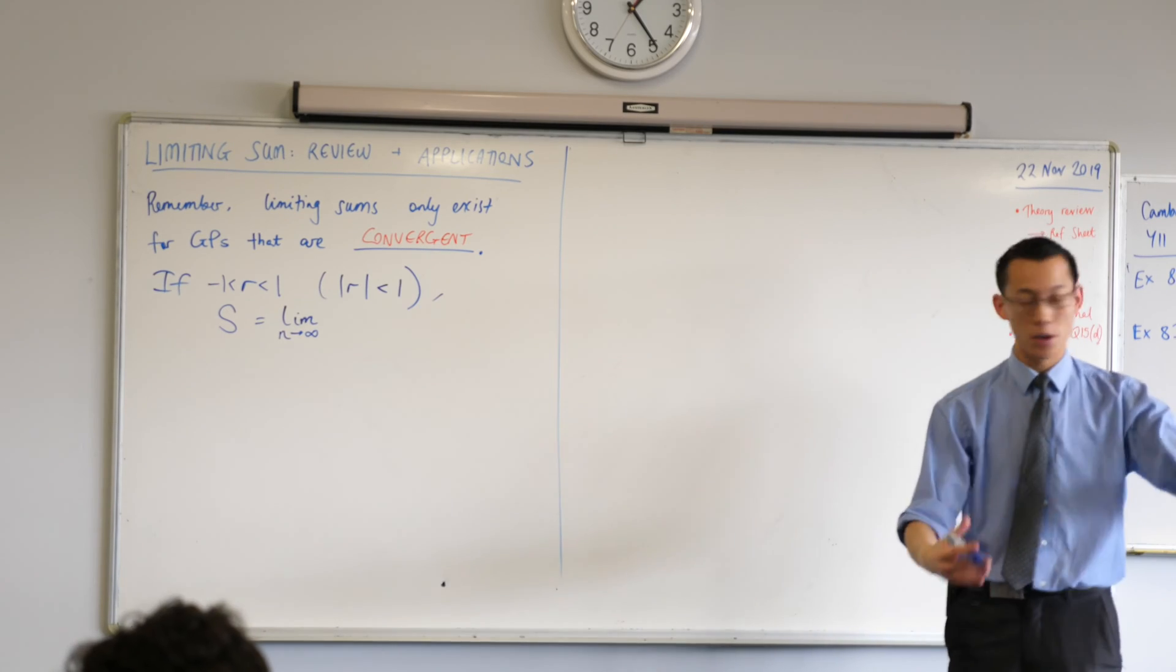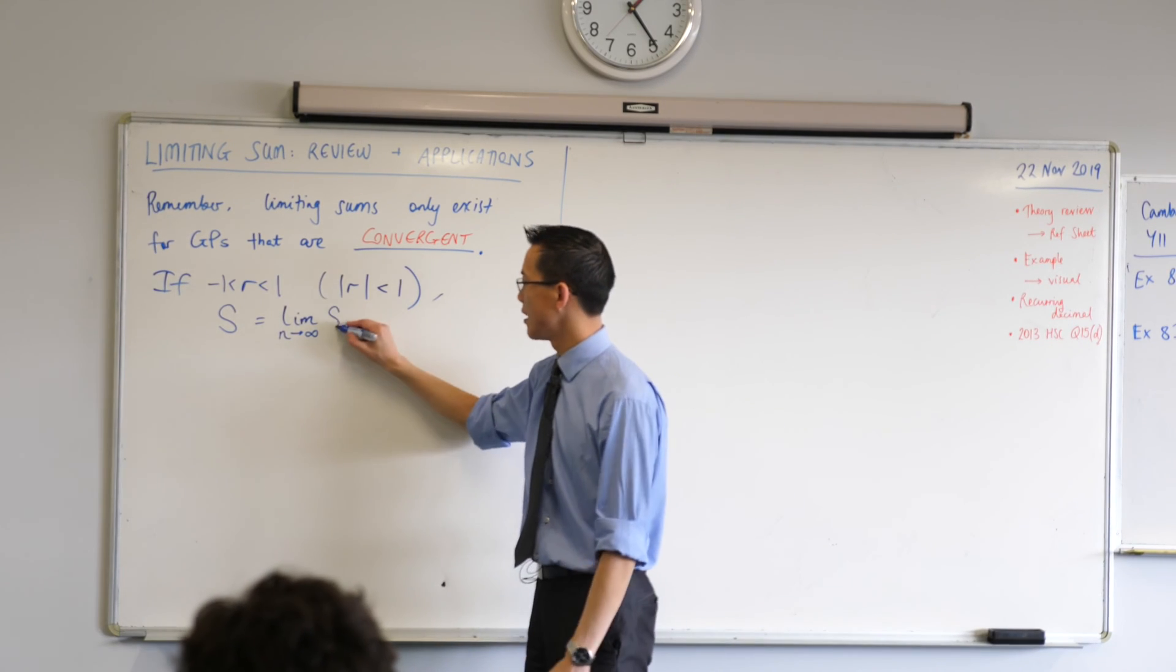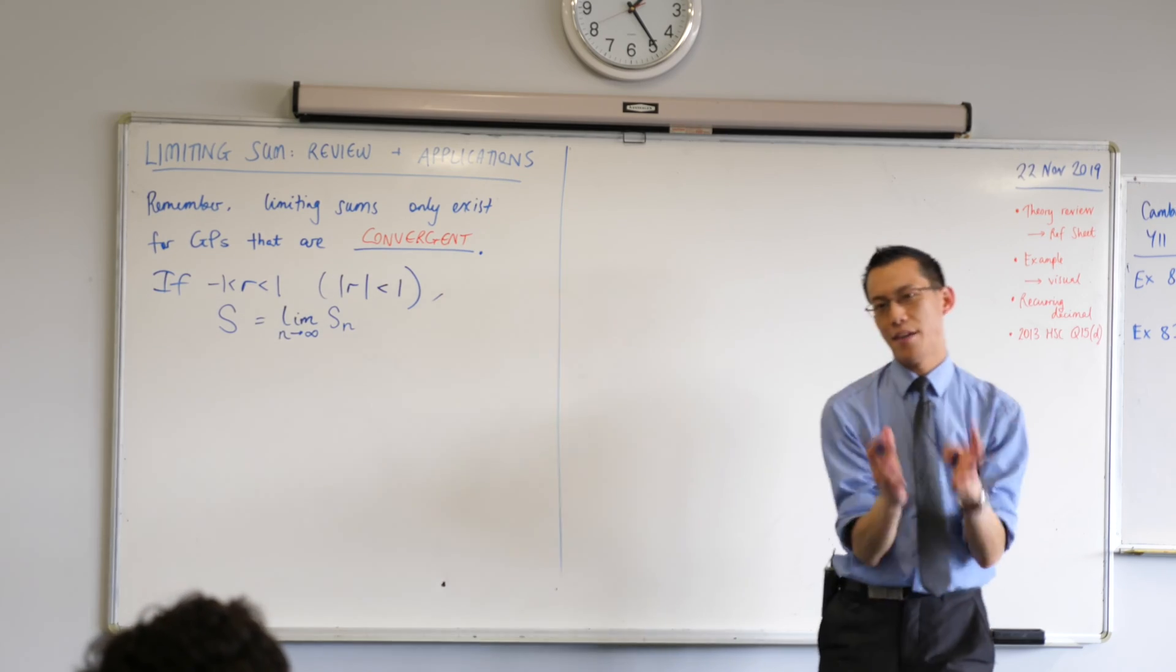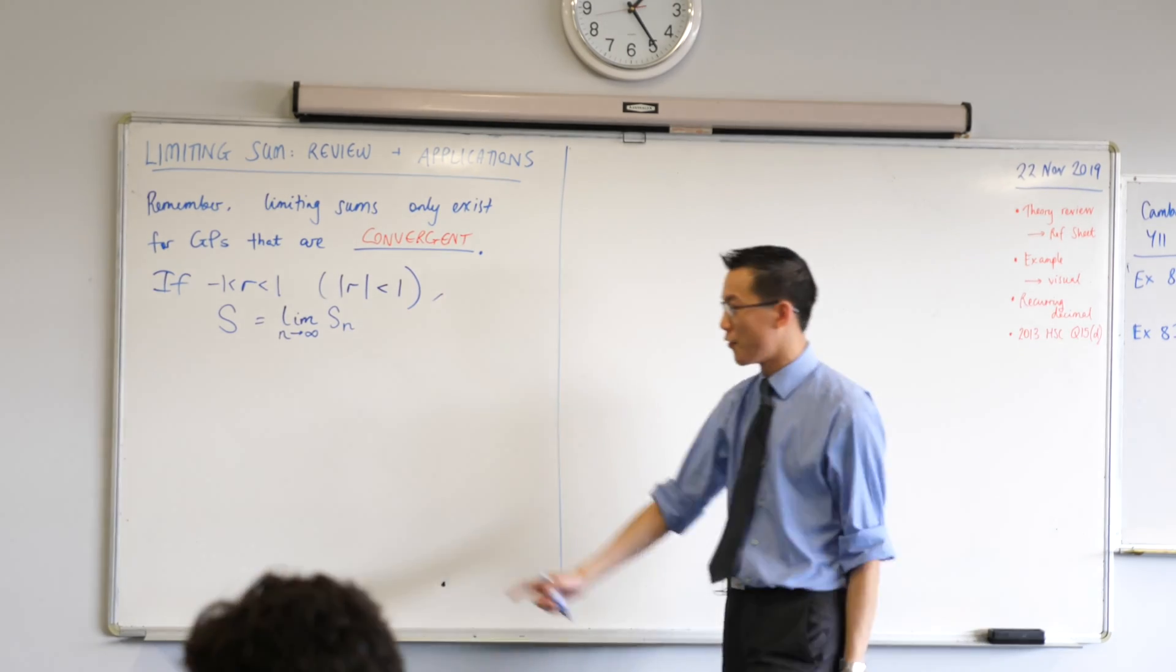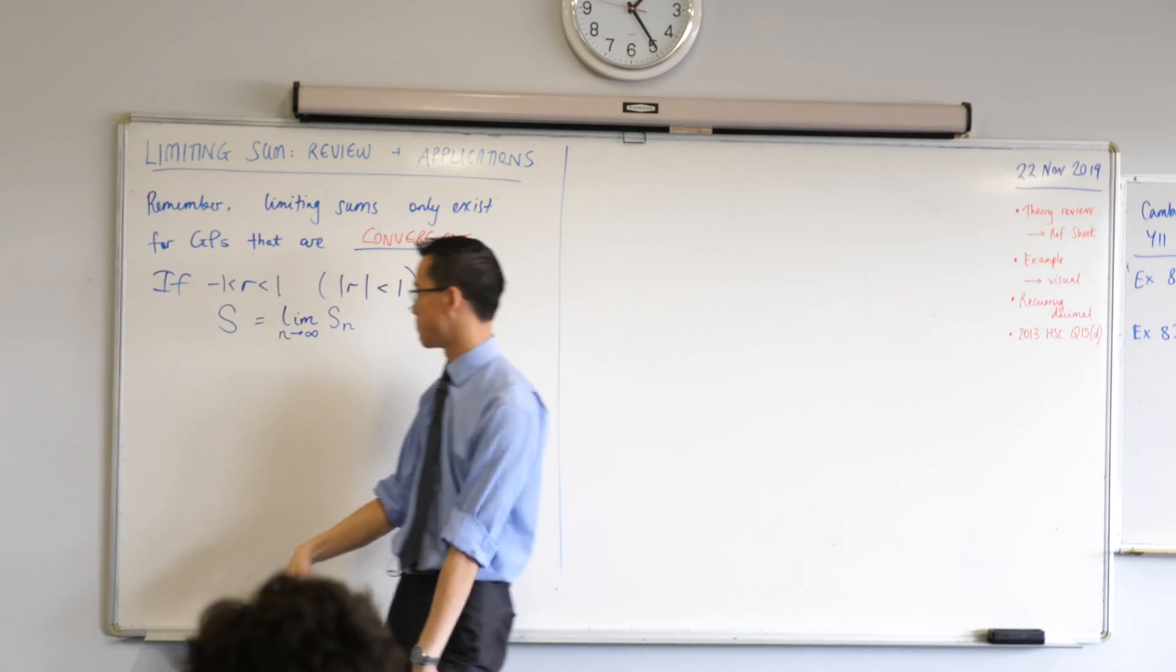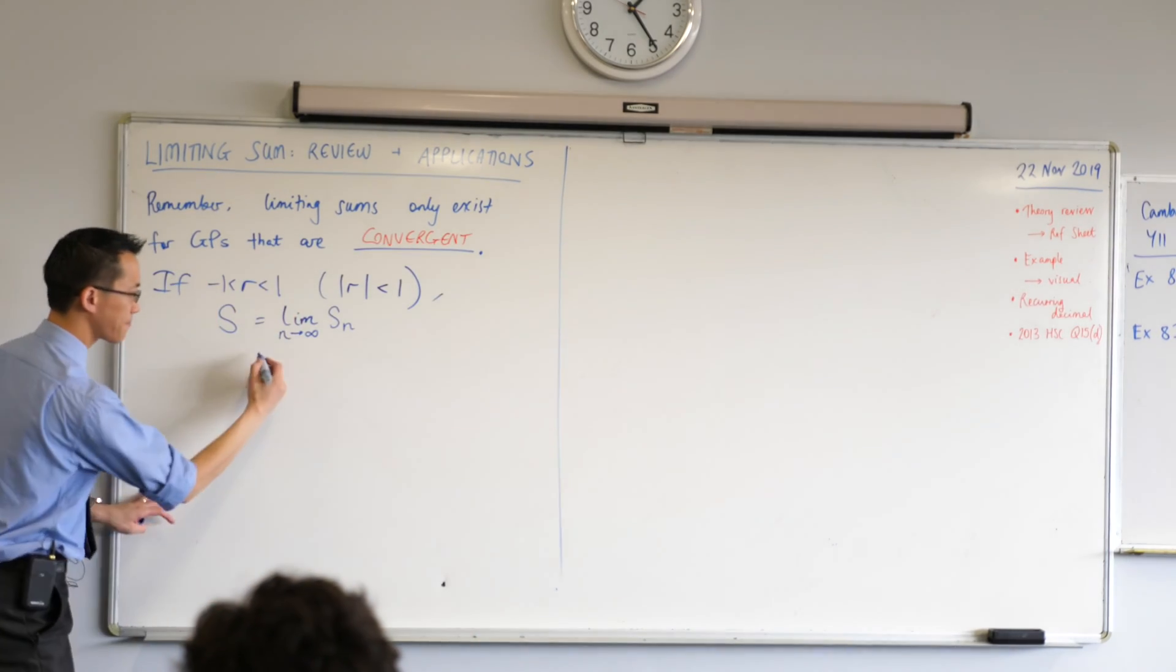Limits, right? So what we're interested in - we want to think about what happens to that partial sum as n gets bigger and bigger and bigger. So here is the nth partial sum. So this is our definition for the limiting sum. In fact, it's the reason why we call it the limiting sum. It's because it's the product of a limit, or the result of a limit, I should say.